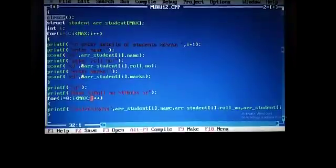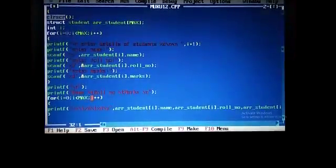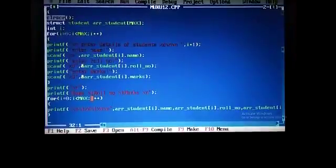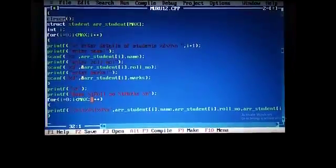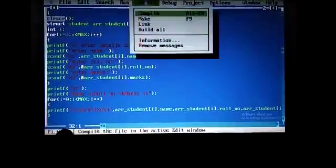Then, we print all the details. To print the detail, we use a for loop initialized with 0 to max. Now, we compile it, then we run it.